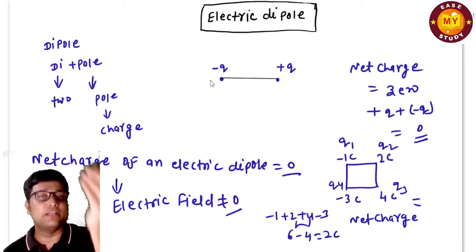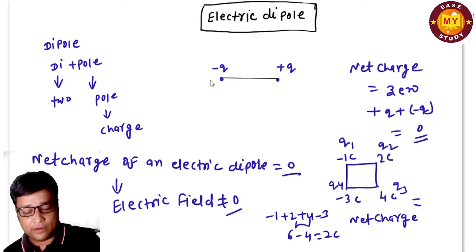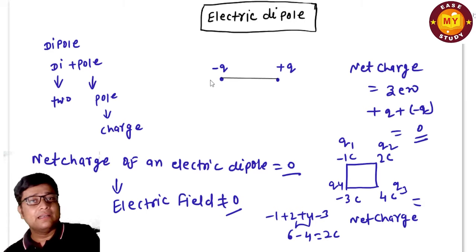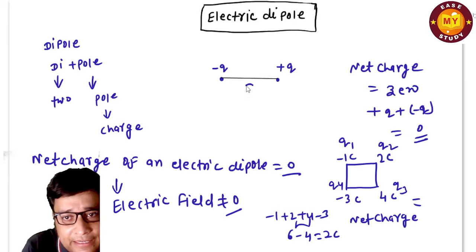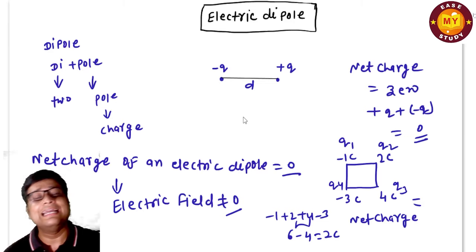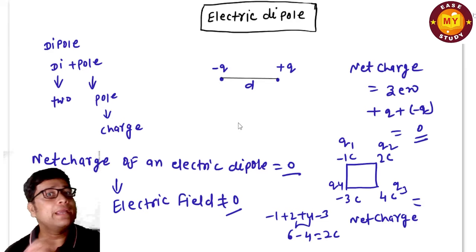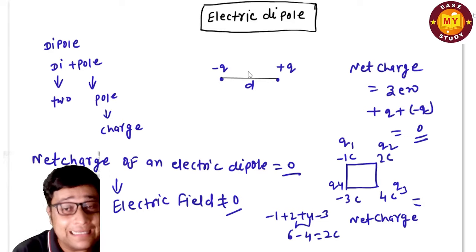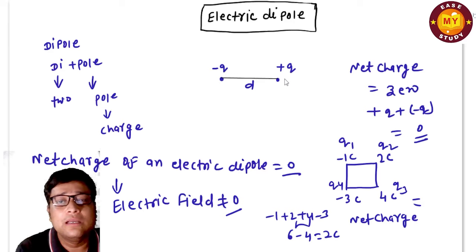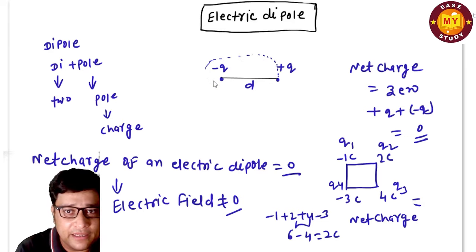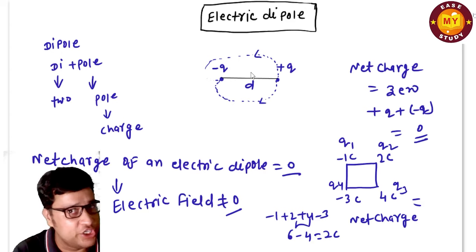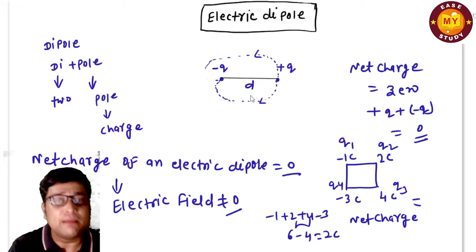When the charges are separated by a distance d — or 2a as written in NCERT — this combination of −q and +q gives interesting physics. The electric field lines originate from the positive charge and terminate at the negative charge. Note that d and 2a are simply different notations used in different books; for NCERT the distance is 2a, for H.C. Verma it is d.